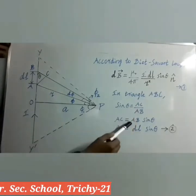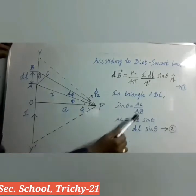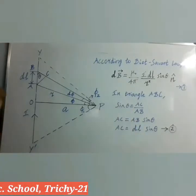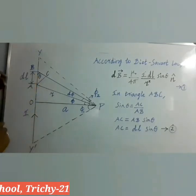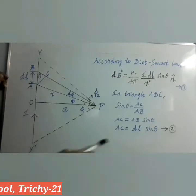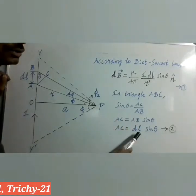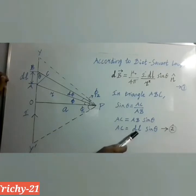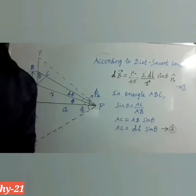We can rearrange that expression to get the value of AC — AB can be taken to the left side. So AC is equal to AB sinθ. The segment AB has the length DL, so DL is substituted here: AC is equal to DL sinθ. This is equation number 2.